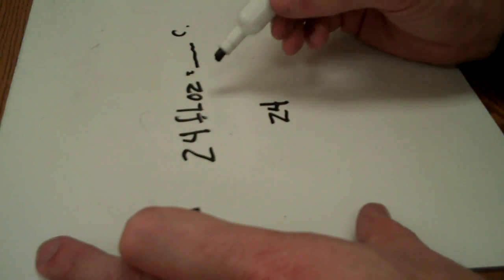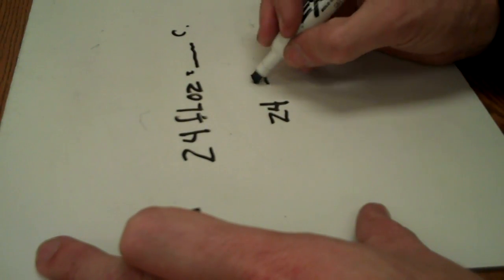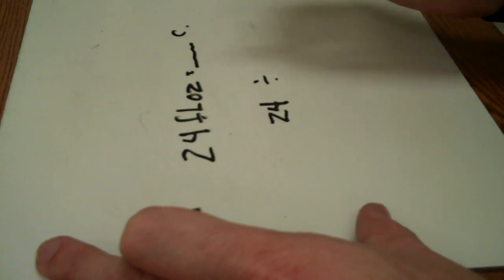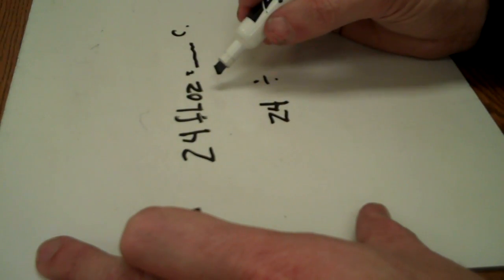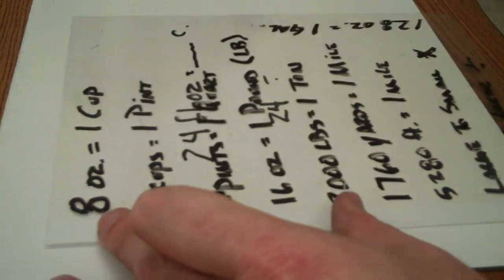You're going from something that is small. Ounces is smaller than a cup. So, we're going to have to divide. So I know I'm going to have to divide. Now, how many ounces are in a cup? Well, our memorization: eight ounces equals one cup.